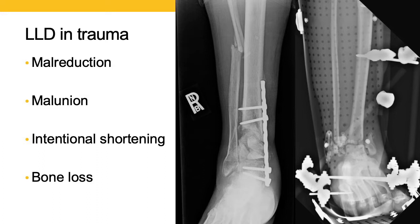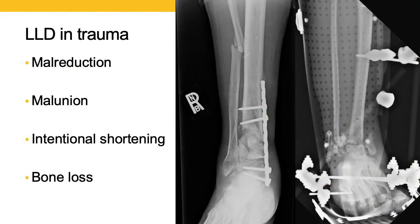Limb lengthening in trauma is very common and can happen for a variety of different reasons. One simple way would be a malreduction — somebody failed to get appropriate length on their tibial fracture or femoral shaft fracture. Or the patient could proceed on to a malunion, whether from an initial malreduction or because fixation failed and the patient shortened late. There may be times where we intentionally shorten the patient, such as treating a humeral shaft fracture or in certain lower extremity fractures where we need compressible surfaces. Most commonly, patients have bone loss and in the process of addressing that defect, we lose some length.